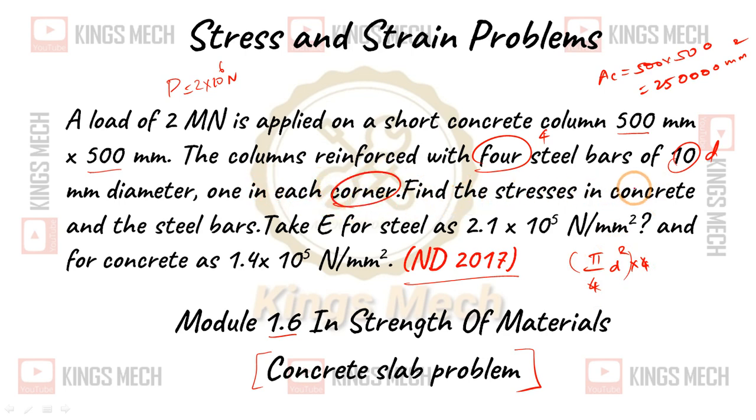One in each corner. Find the stresses in concrete and steel bar, so sigma C and sigma S. Take E for steel as 2.1 times 10 power 5 N per mm square, and for concrete as 1.4 times 10 power 5 N per mm square.